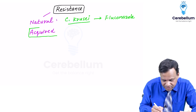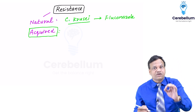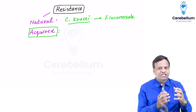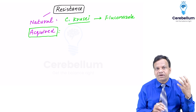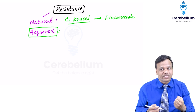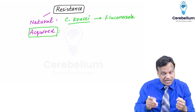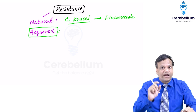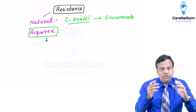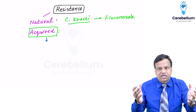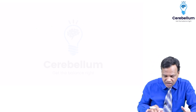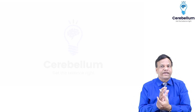Acquired resistance is the clinical problem. Initially the organism was sensitive — for example, Staphylococcus aureus could initially be killed by penicillin G, but then it became resistant. That is acquired resistance. The question is how bacteria can become resistant — what are the various biochemical methods?